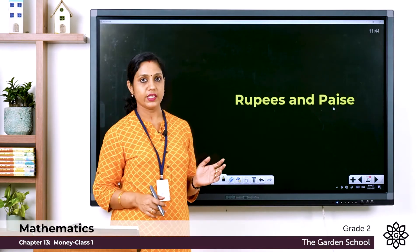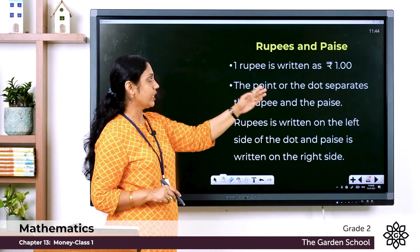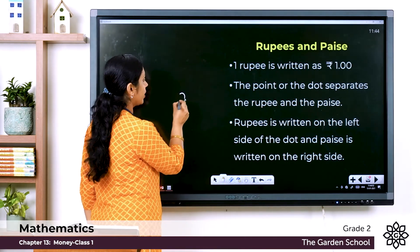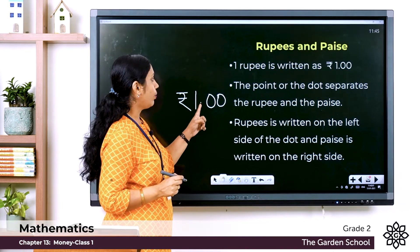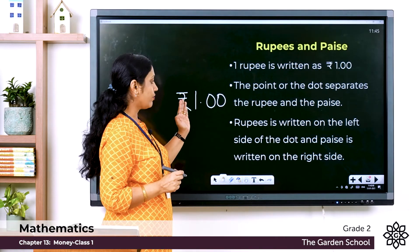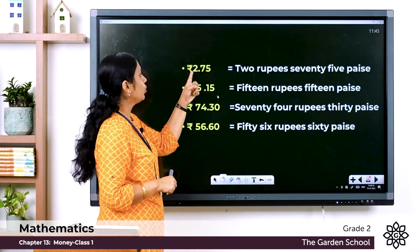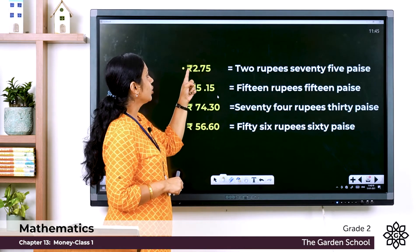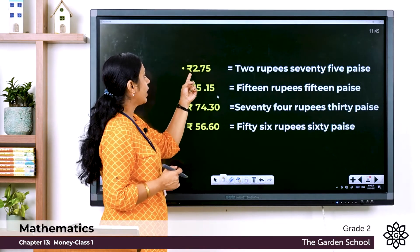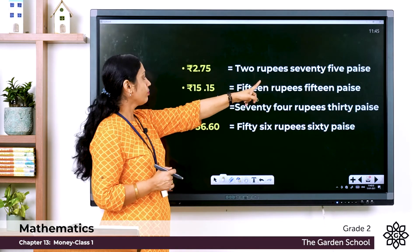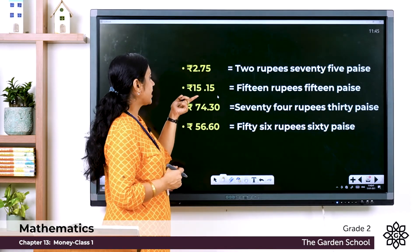Next topic: Rupees and Paise. It is written as rupees 1.00, read as 1 rupee. The dot or decimal point separates rupees from paise — rupees are written on the left side of the dot and paise on the right side. For example, 2.75 is read as 2 rupees 75 paise. The left side of the dot gives rupees, the right side gives paise.